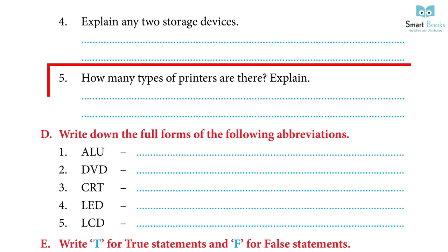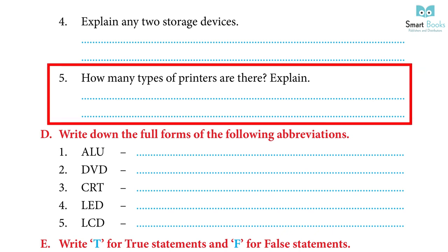5. How many types of printers are there? Explain. Answer: There are three types of printers — laser printer, inkjet printer and solid ink printer.